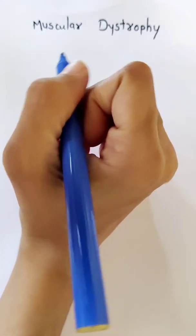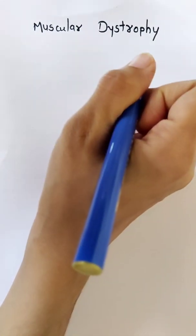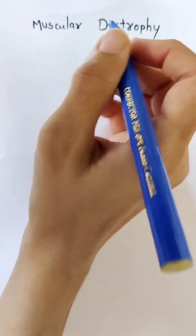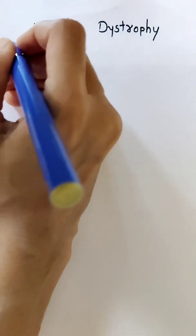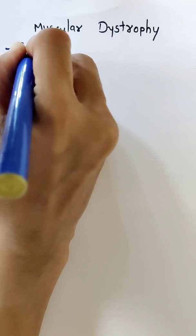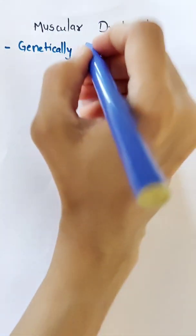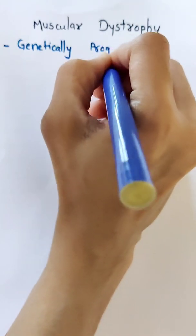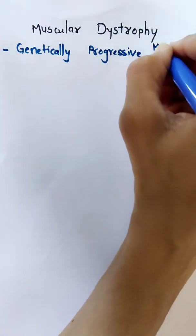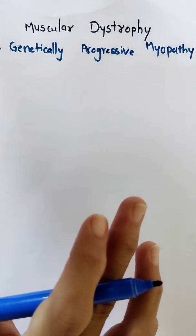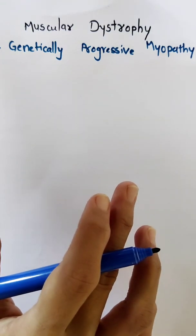Today we discuss what is muscular dystrophy and the difference between DMD and BMD. Muscular dystrophy is a genetically progressive myopathy.